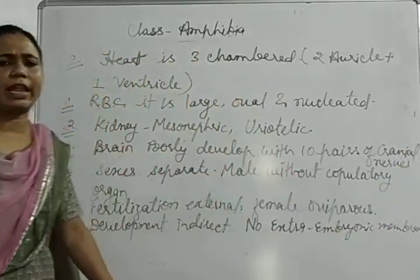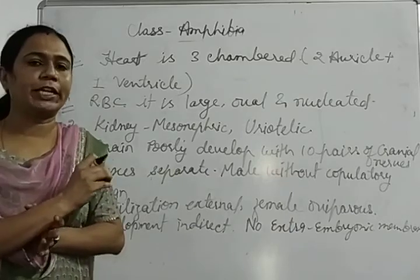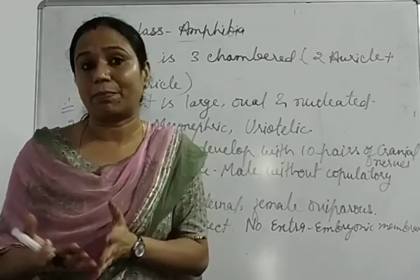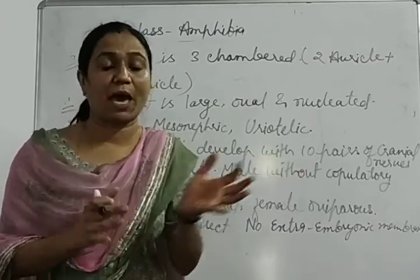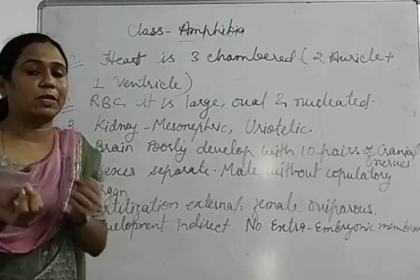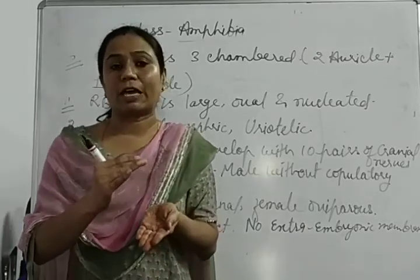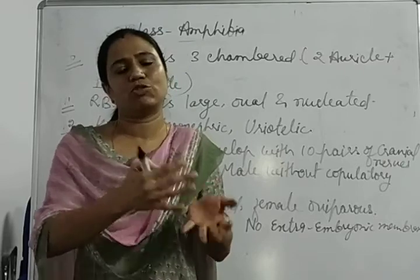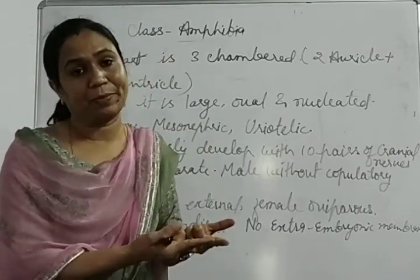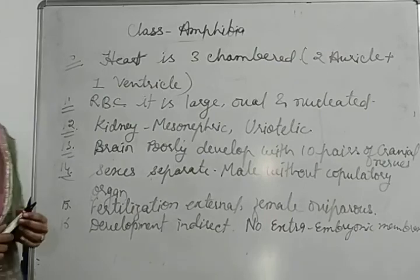These are all the general characters of class Amphibia. These animals are phylogenetically important because they made the transition from water to land. They are semi-aquatic — they live on land but return to water for egg-laying, and initial development is completed in water, meaning they are still dependent on the aquatic atmosphere. In the next class we will discuss classification. Thank you so much.